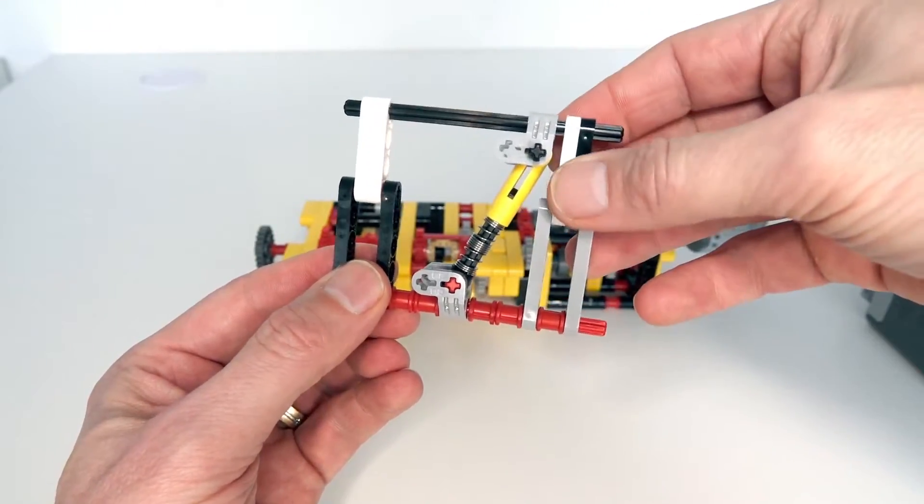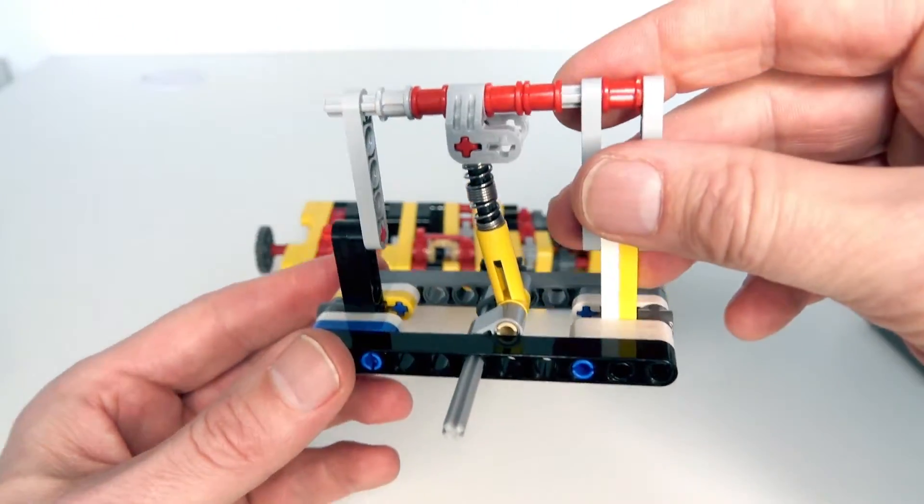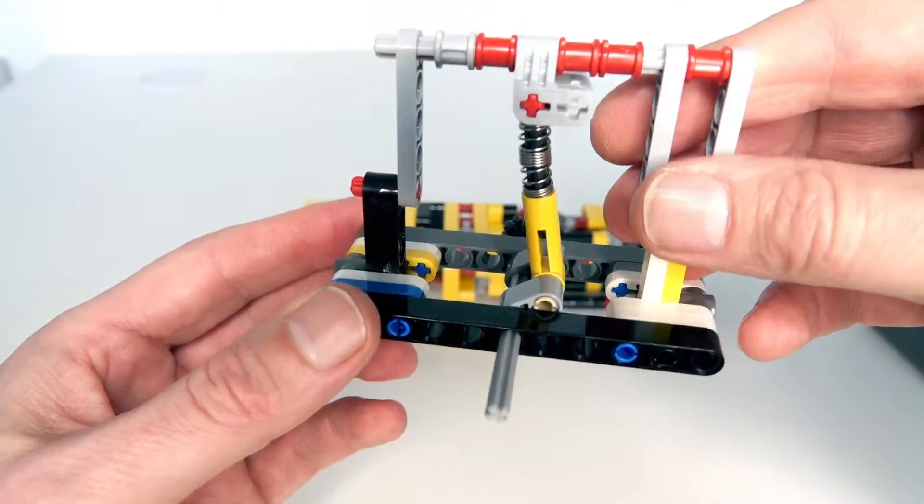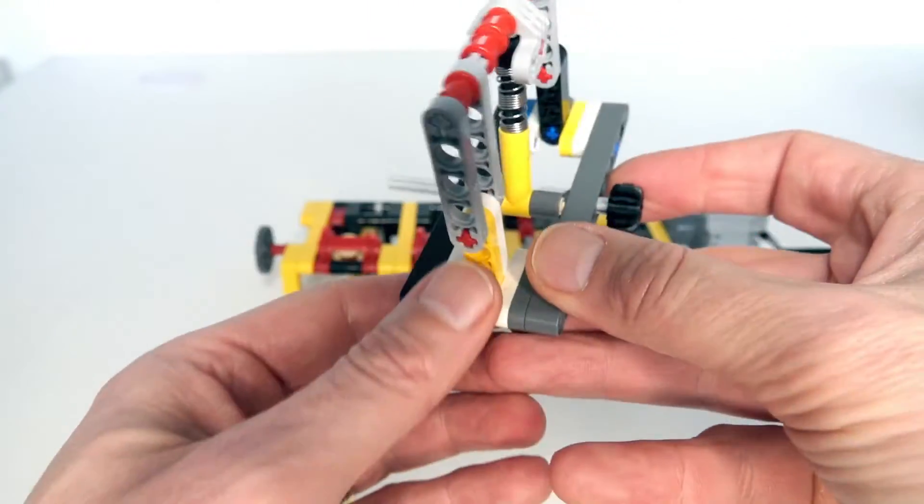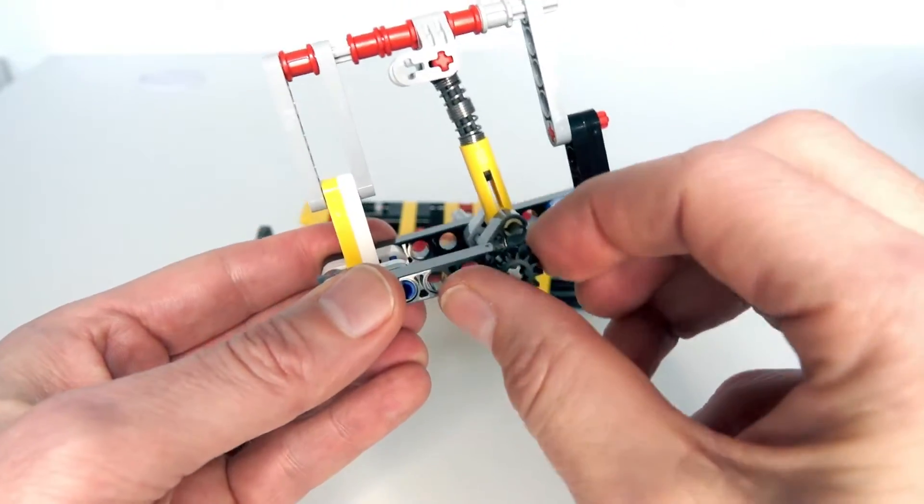So I came up with a second prototype, which was kind of based on the same idea. But now instead I've got this axle at the bottom that allows that rotation. So we're going between two different states.